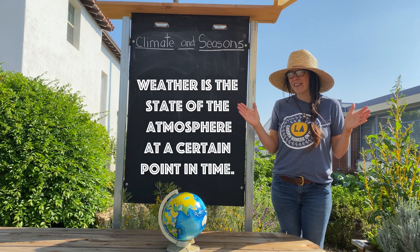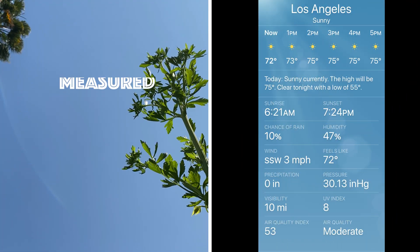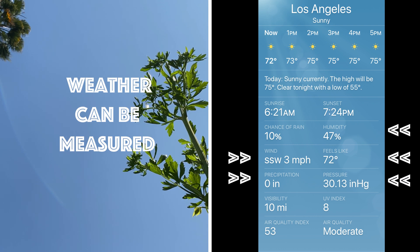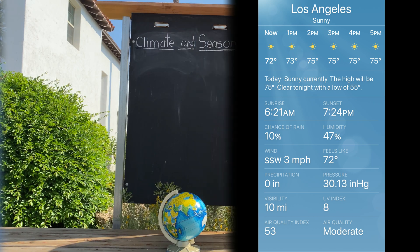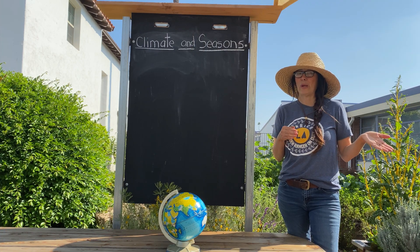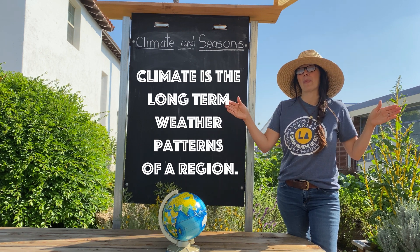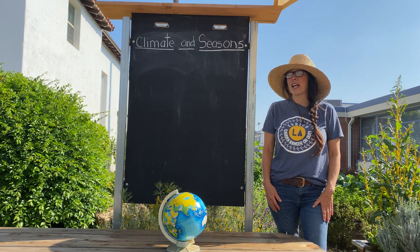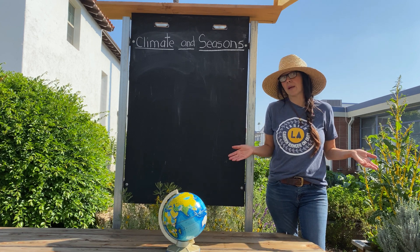Weather is the state of the atmosphere at a certain point in time. What is the difference between weather and climate? Climate is the long-term weather patterns in a particular region. Every region has different weather patterns throughout the year, which means it has different climate.